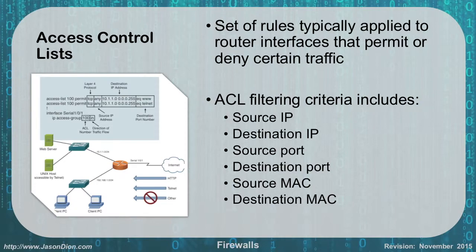As shown in the diagram, access list 100 permits TCP traffic. It permits any source — so traffic can come from anywhere — and its destination is the 10.1.1.0 network. If it matches the specified port, in this case port 80 (web/HTTP traffic), it's allowed. The second line covers port 23 for Telnet traffic. This is all applied to a specific serial interface of the router. As traffic from the internet comes in, if it's web or Telnet traffic it will be allowed; any other type such as FTP or SSH will be blocked based on this ACL.